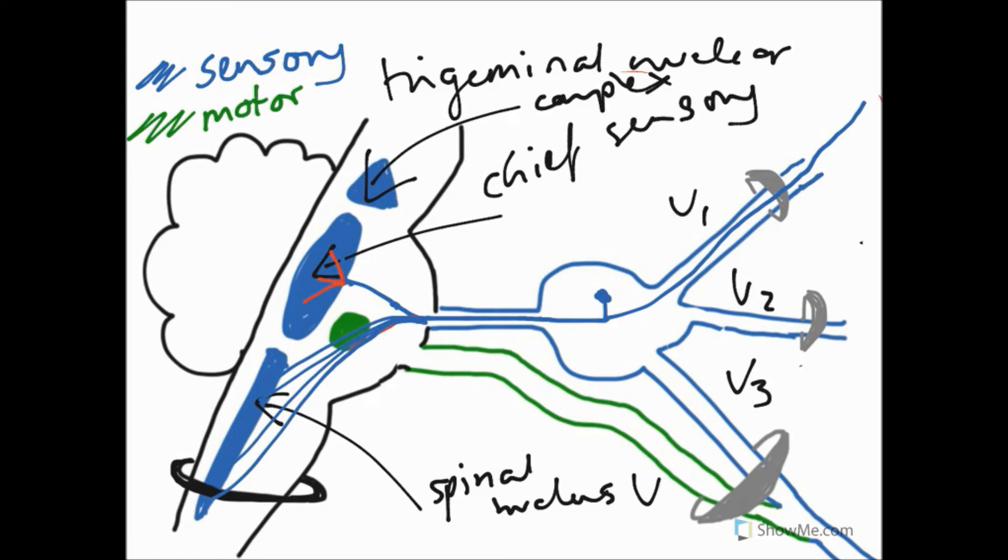So the information, so these would be multiple different nerve fibers. And before it reaches spinal nucleus five, it actually is carried in a tract. So these are going to be axons. And this tract here is going to be called spinal tract five. So information is going to travel via spinal tract five, which is analogous to Lissauer's tract in the spinal cord.